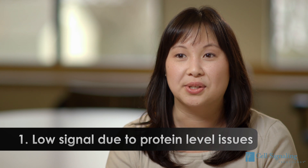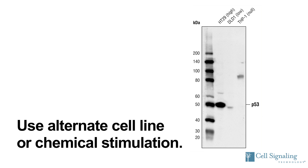There are a number of causes for low signal. The first cause is that the protein of interest is below detectable levels. If this is due to minimal expression in the starting cell line or tissue sample, a side-by-side comparison using an alternate cell line may be necessary, or a chemical stimulation to induce expression may be needed.